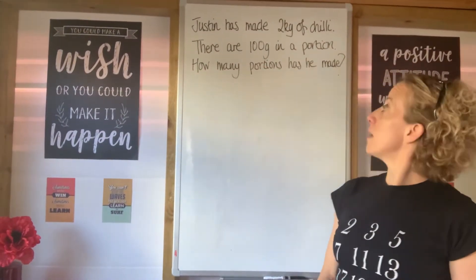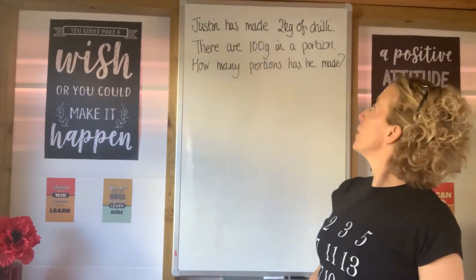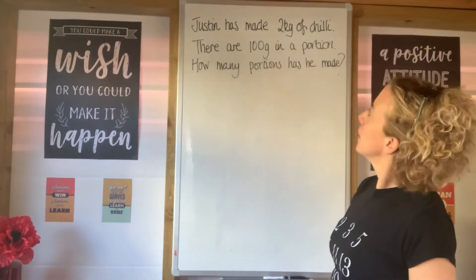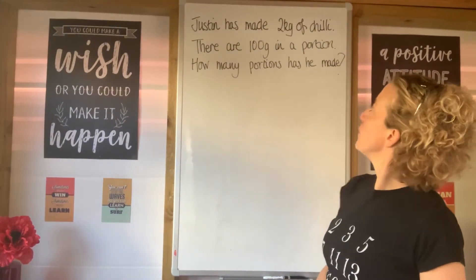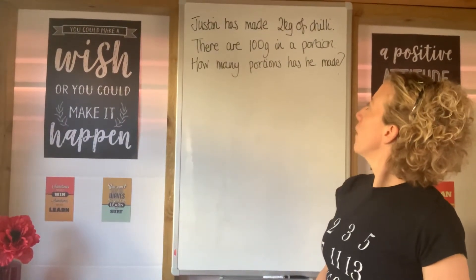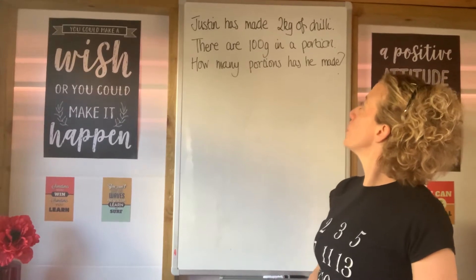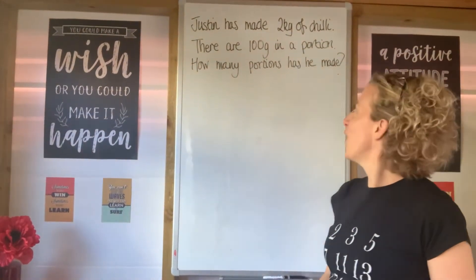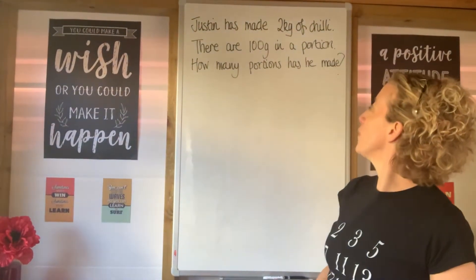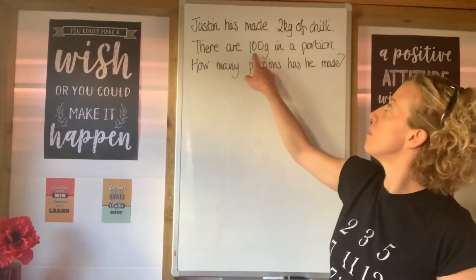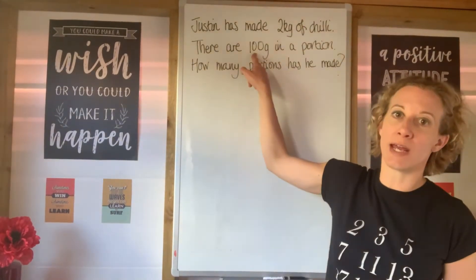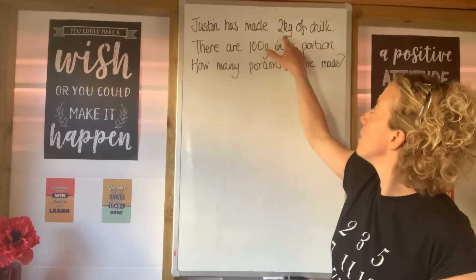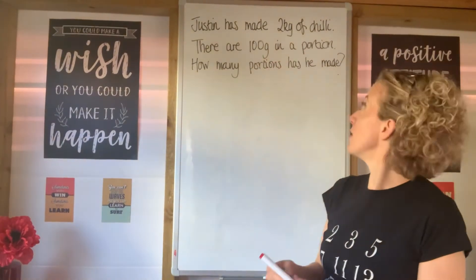This is a question about mass — grams and kilograms. Justin has made two kilograms of chili. There are 100 grams in a portion. How many portions has he made? Because we've got the measures in two different units, we're going to have to change them to the same. We've got 100 grams and two kilograms.